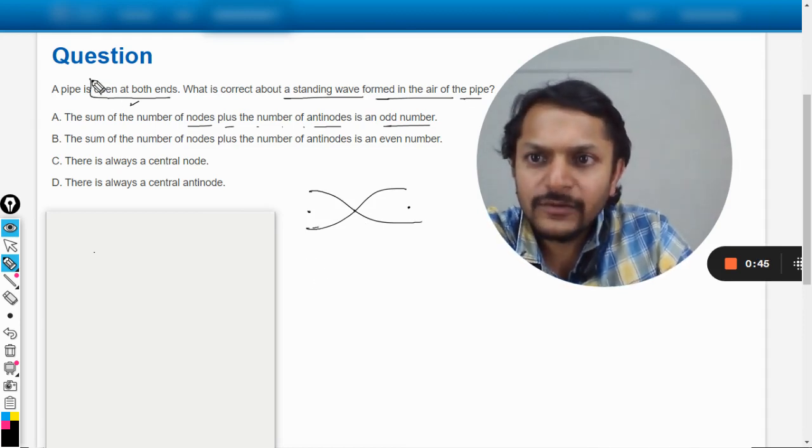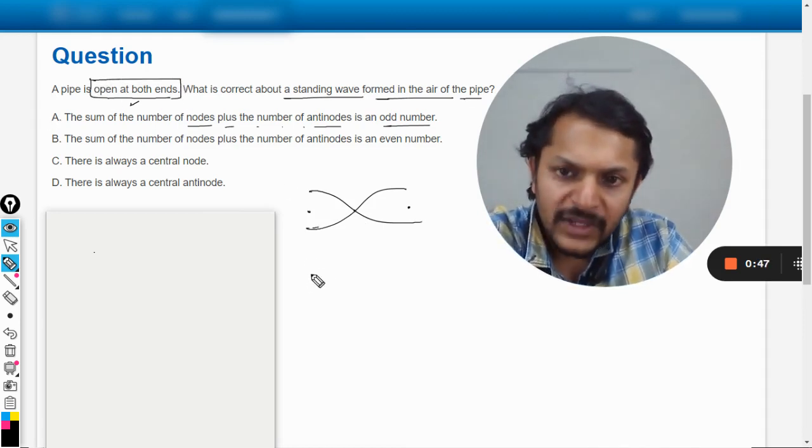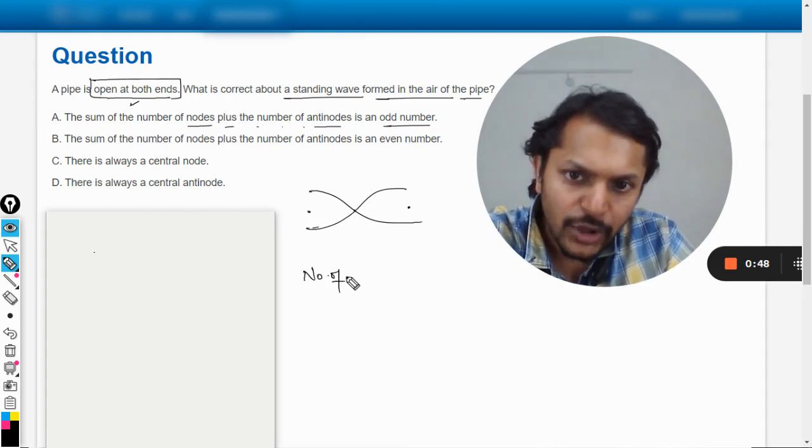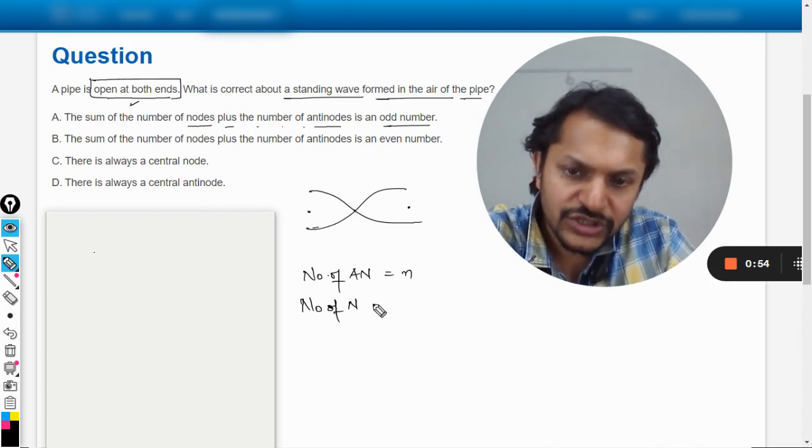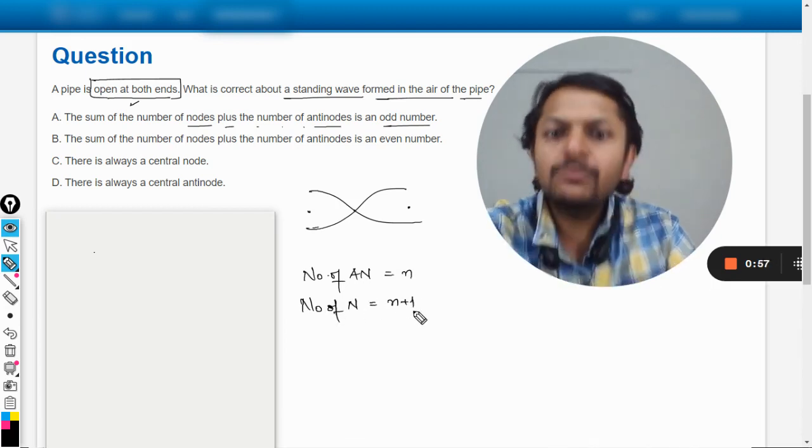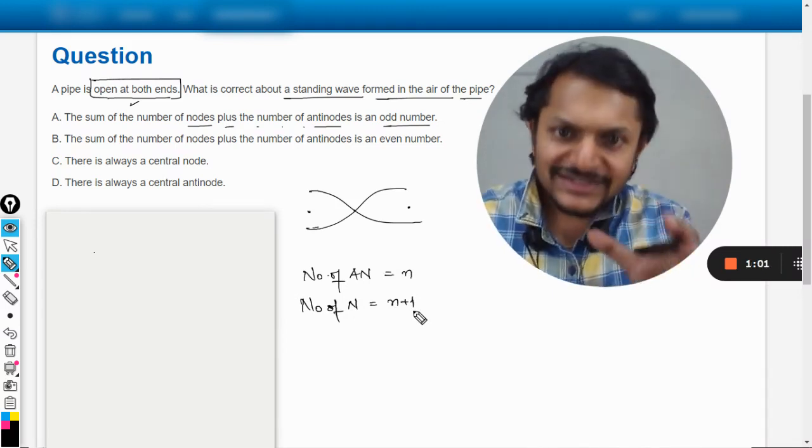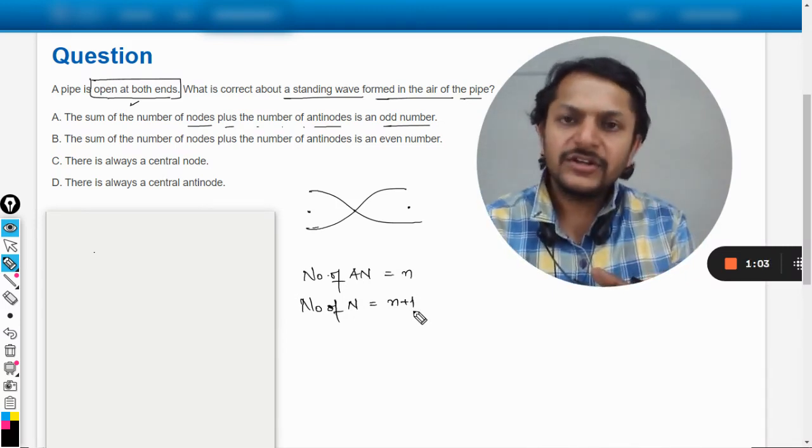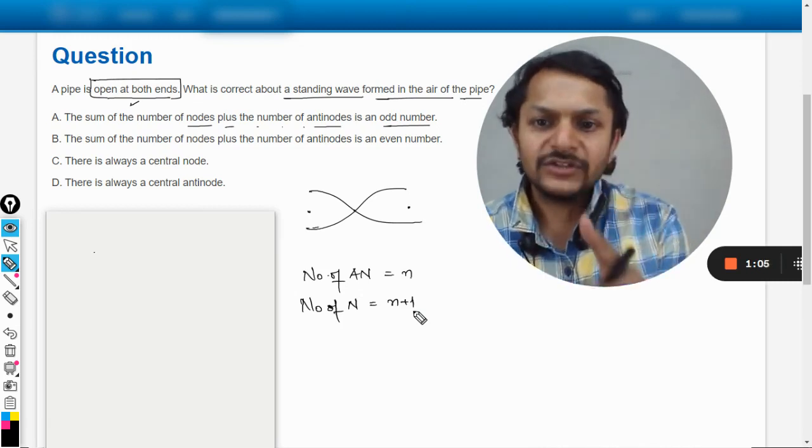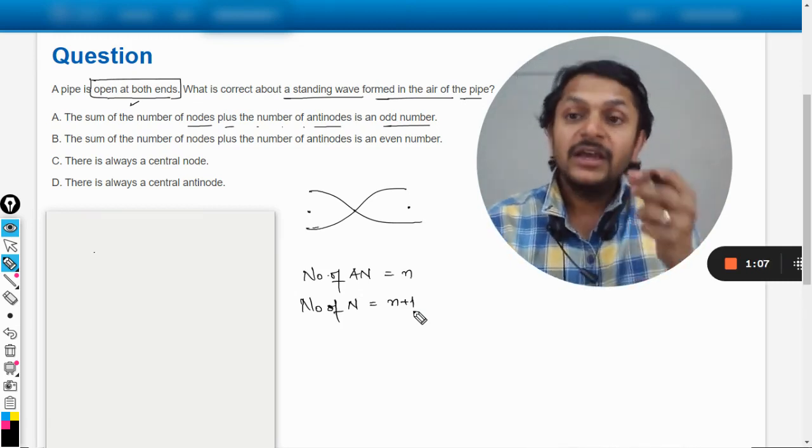So I can say that in the case of both ends open, the number of antinodes will be n and the number of nodes will always be n minus one. See this thing, there is a pattern here you can see, if we're talking about both ends open, so this thing will be happening.